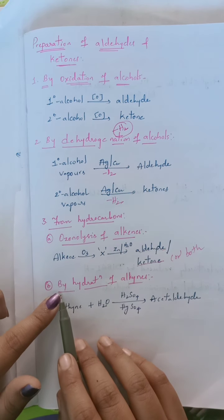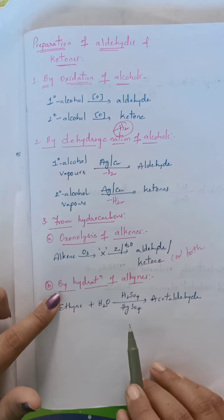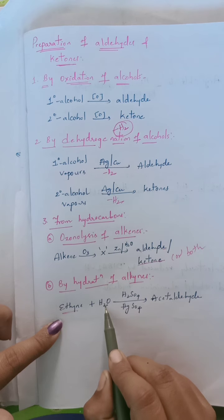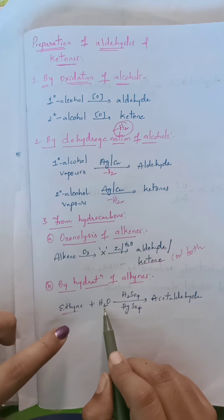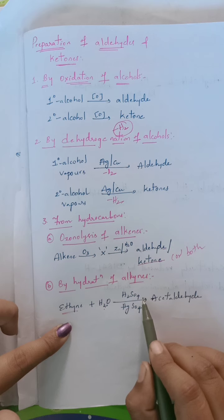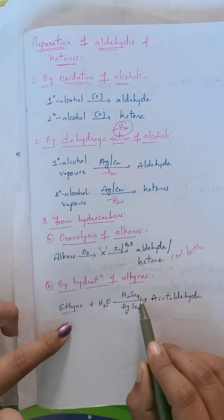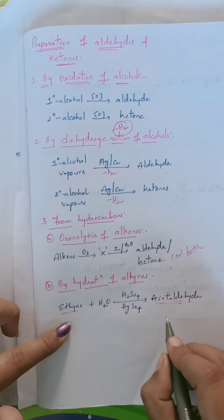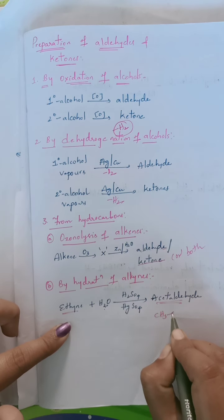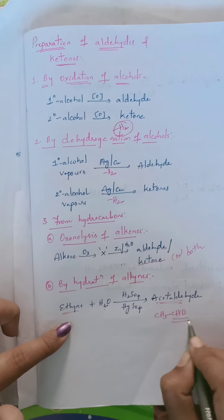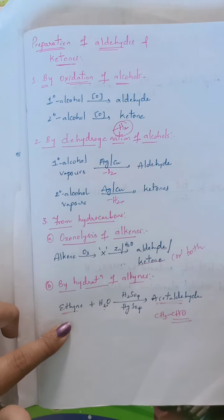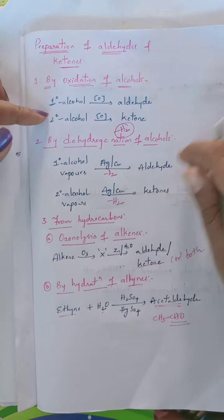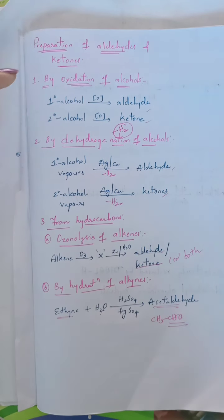Another method from hydrocarbons is hydration of alkynes. For example, ethyne — hydration means addition of water. When water is added to ethyne in the presence of sulfuric acid and mercuric sulfate, it converts into acetaldehyde, CH₃CHO, which contains the aldehyde group. Using these three important methods we can prepare both aldehydes and ketones.